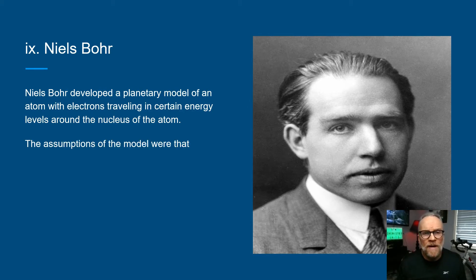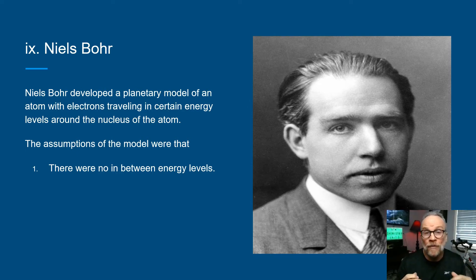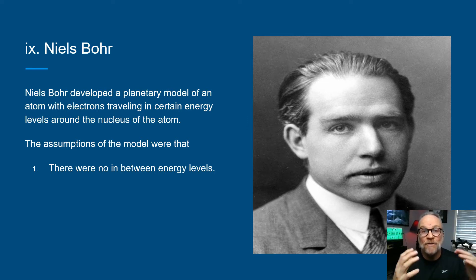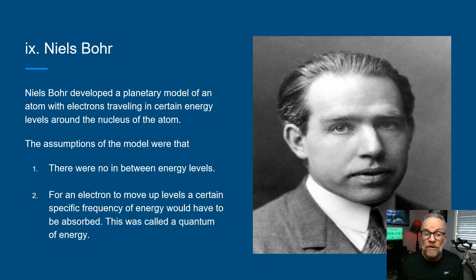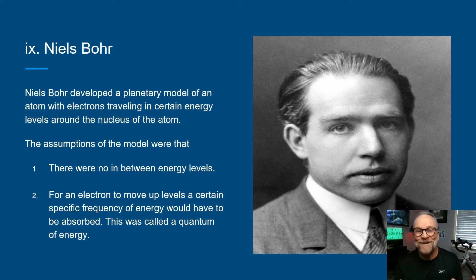Bohr came up with this planetary model, and it had some assumptions. First, there were no in-between energy levels — you were either in one energy level or the other. To reach a higher energy level, you had to absorb a frequency of energy high enough to get to the next level. A certain specific frequency of energy would have to be absorbed for an electron to move up a level. They call this a quantum of energy, and that's where the quantum mechanical model comes from.